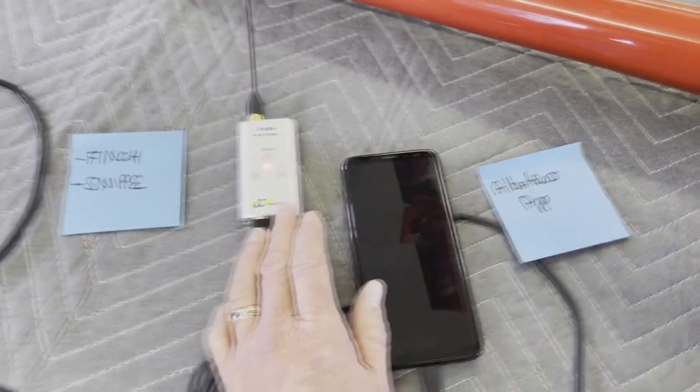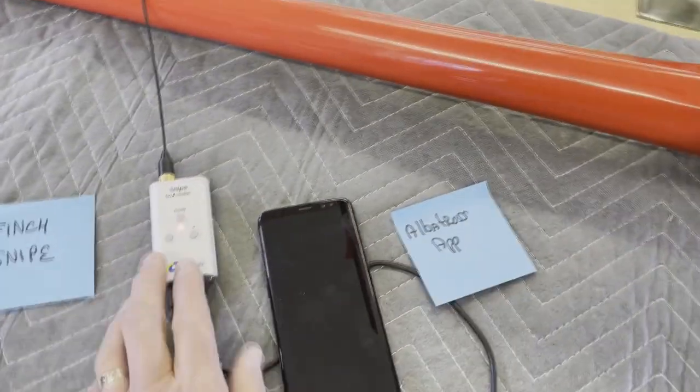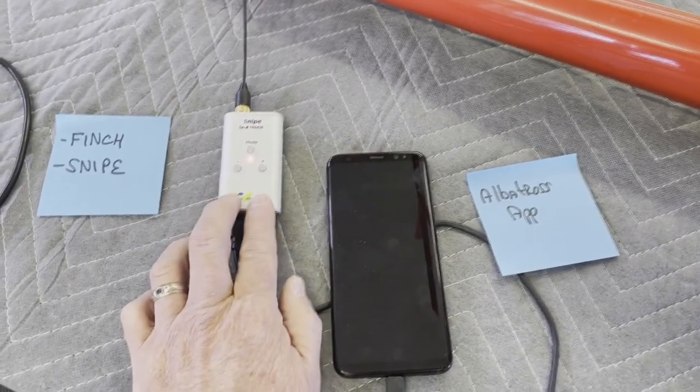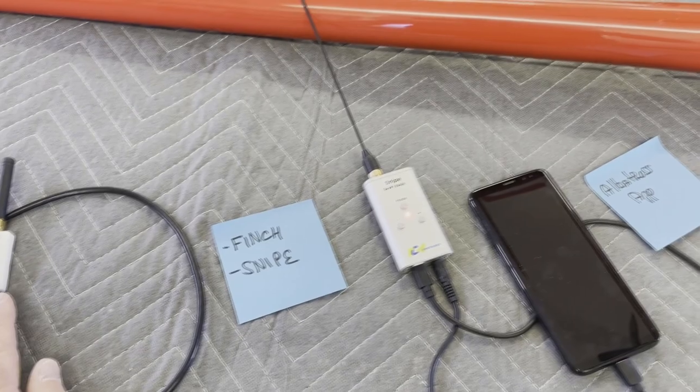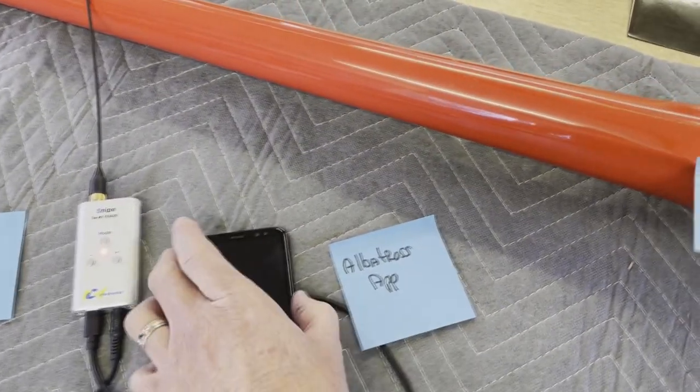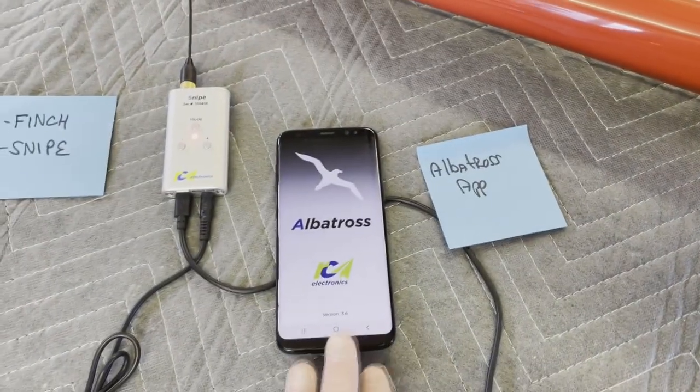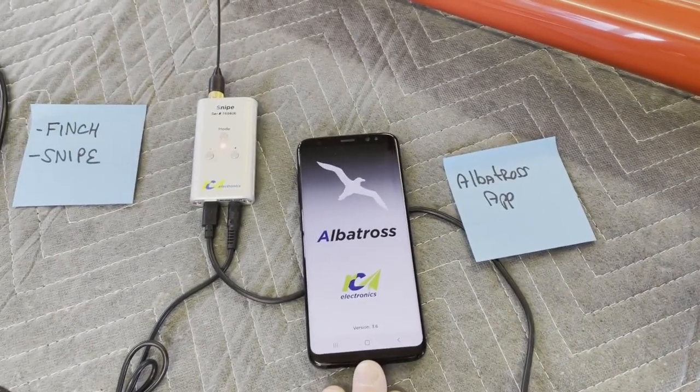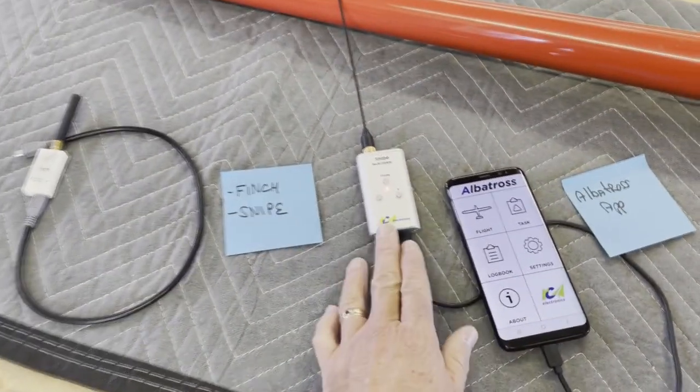The difference between the two is that the Snipe has all of the audio files inside of the Snipe. Whereas with the Finch, when it is plugged into the phone or your tablet with the app running, you'll get all the audio out of the phone. It does not give you as much information as the Snipe does.